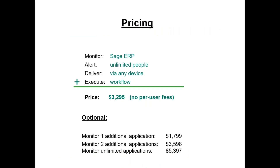Before we get into the application itself, it's worth discussing how it's licensed and priced. Alerts and Workflow is not licensed per user — it doesn't matter how many users you have in your Sage ERP application. Rather, it is priced according to the number of applications you wish it to monitor and respond to. If you're interested in using Alerts and Workflow to monitor your Sage ERP application — all modules: AR, AP, Inventory, Purchasing, Sales Orders, GL, etc., and an unlimited number of companies — we consider that monitoring a single application, or one connection.